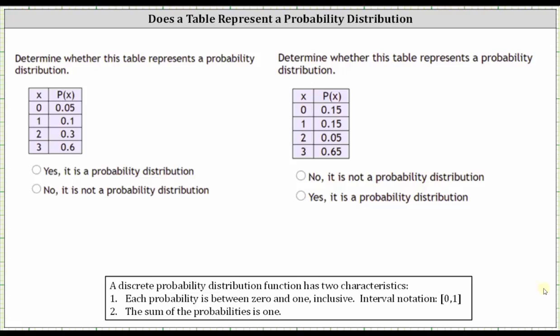Number one, each probability is between zero and one inclusive, which means the interval includes zero and includes one, which we can also indicate using interval notation, where each probability must be in the closed interval from zero to one, indicated using the square brackets, where zero and one are included in the interval.